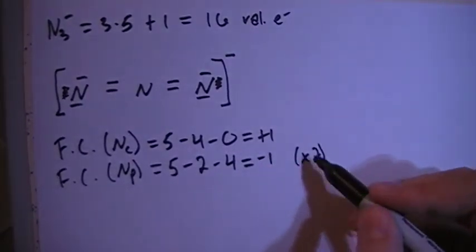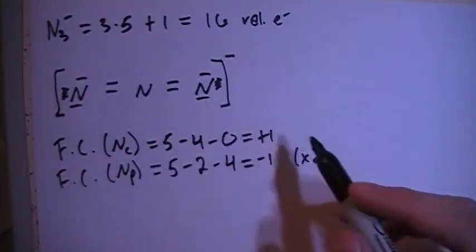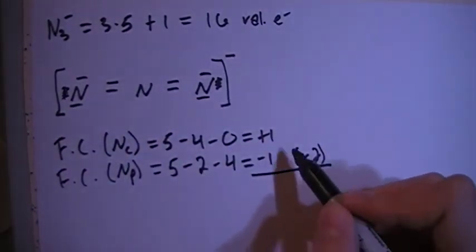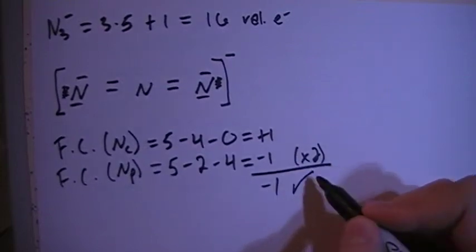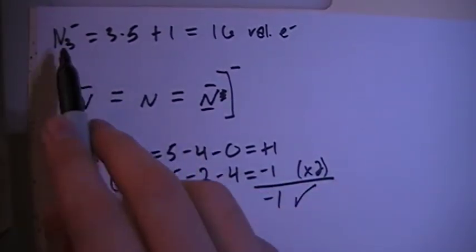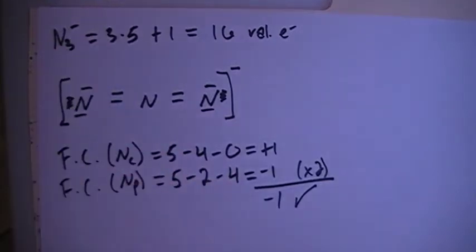So if we add all this up, that should give us an overall formal charge of minus 1, which is what we want, because this ion is a minus 1 charge ion.